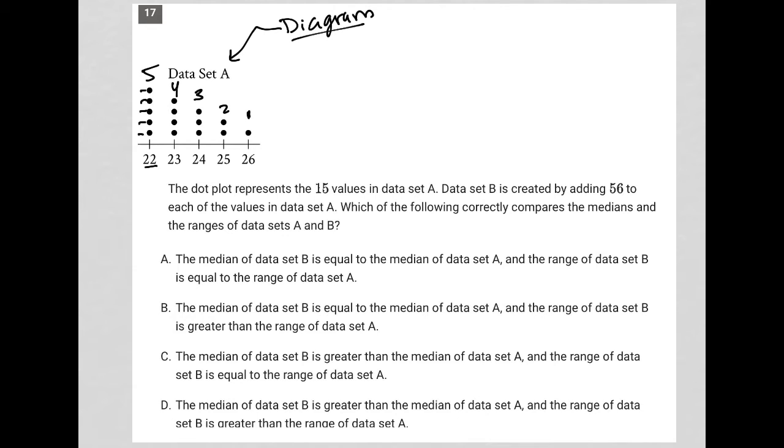The question goes on to say the dot plot represents the 15 values in data set A. Data set B is created by adding 56 to each of the values in data set A. So instead of 22, I'll add 56 to that 22, which gets me to 78. So obviously the next would be 79 and 80 and 81 and 82.